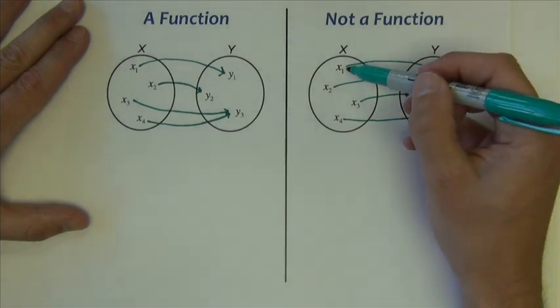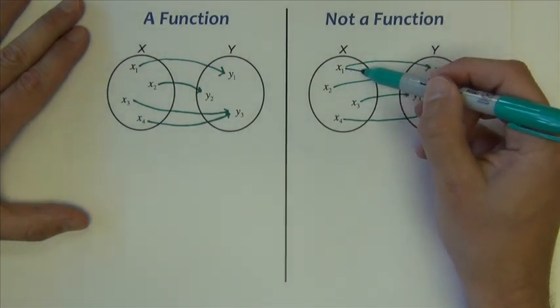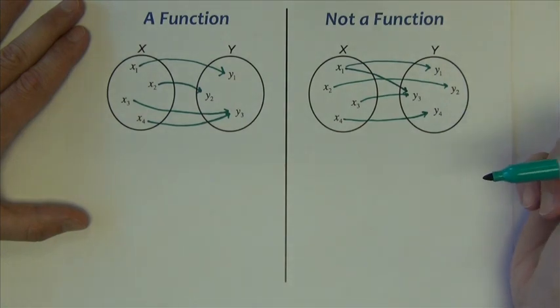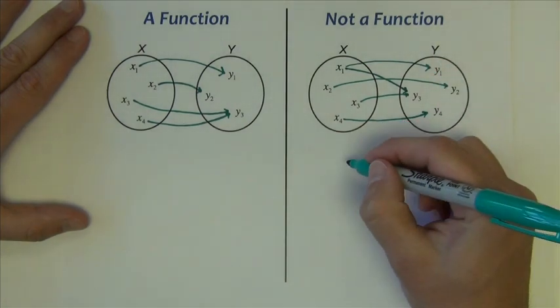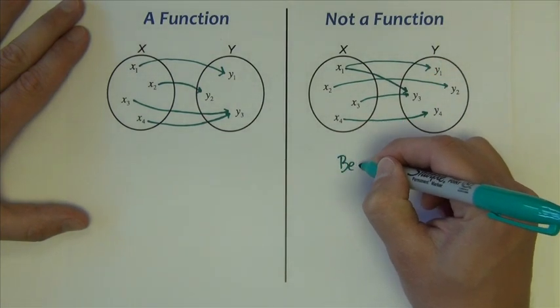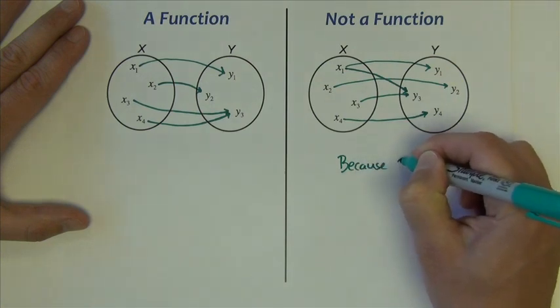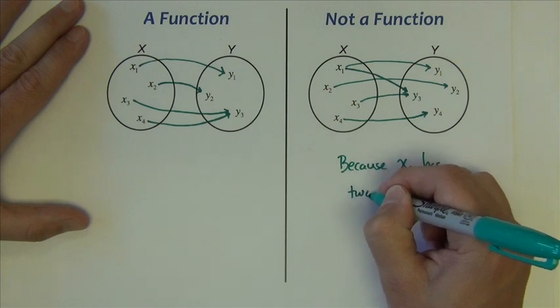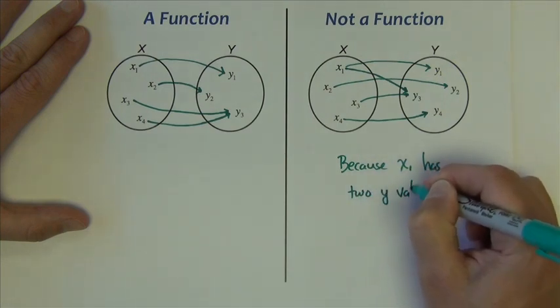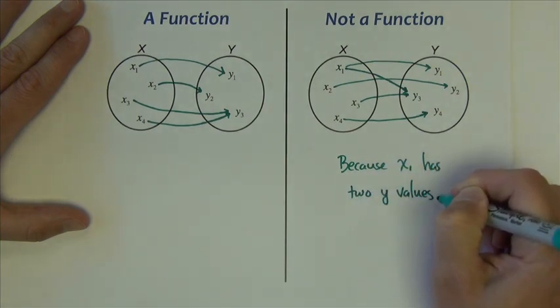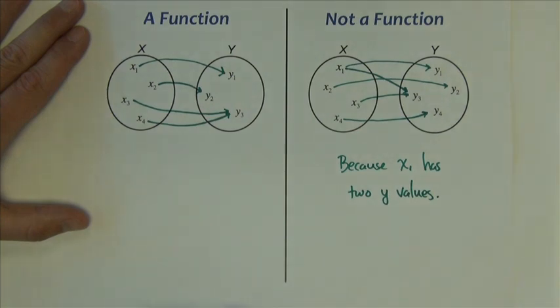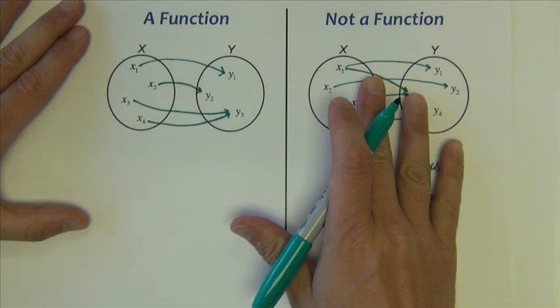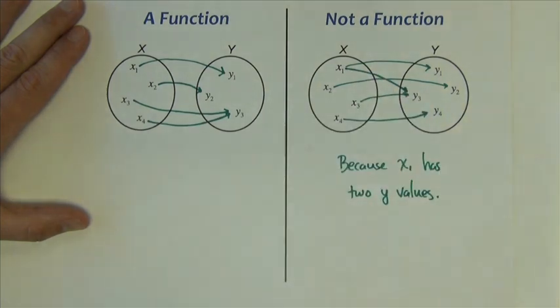But let's say that x1 also goes to y3. This is not a function now because x1 has two y values. So every x has one y, it's a function. If a single x has more than one y, it's not a function.